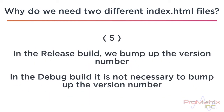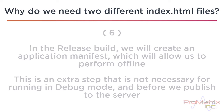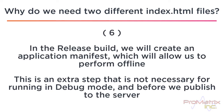In the release build, we bump up the version number. In the debug build, it is not necessary to bump up the version number. In the release build, we will create an application manifest, which will allow us to perform offline. This is an extra step that is not necessary for running in debug mode and before we publish to the server.